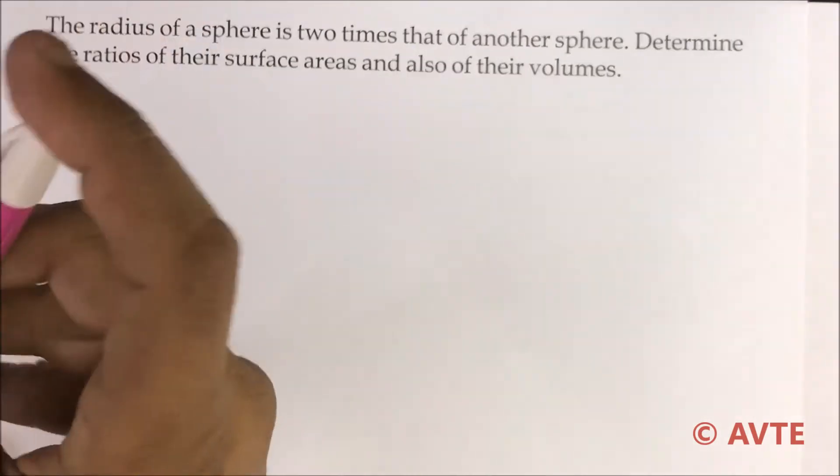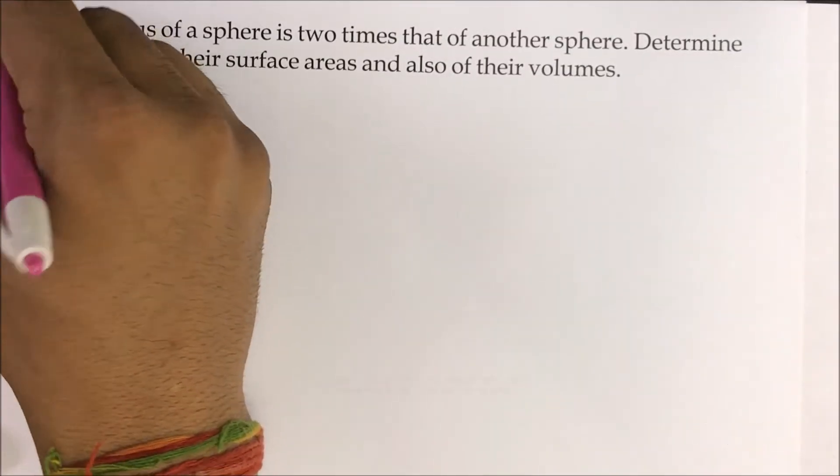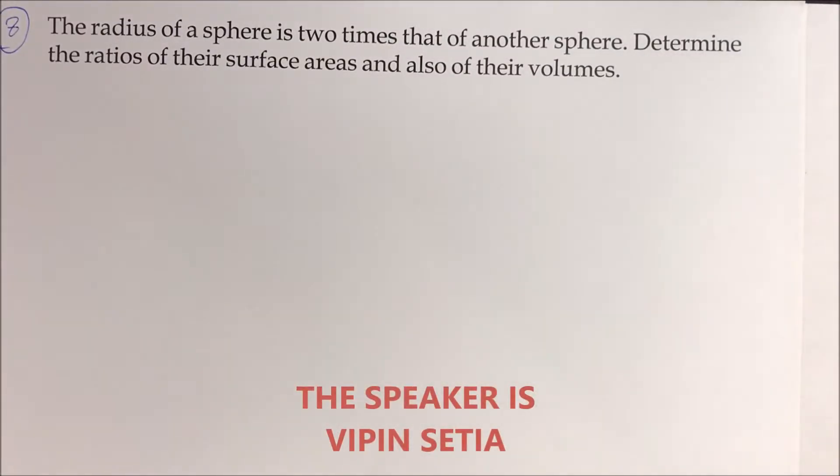This question is question number 8. The radius of a sphere is two times that of another sphere. Determine the ratios of their surface areas and also of their volumes.